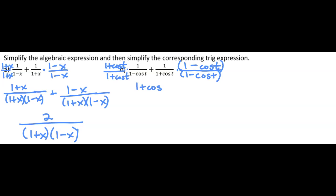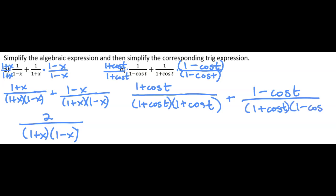And the second fraction will end up with just the one minus cosine t in the top. And in the bottom, it will also have one plus cosine t times one minus cosine t.